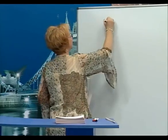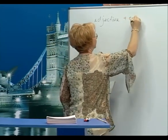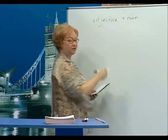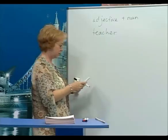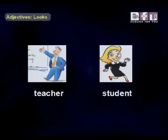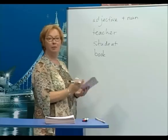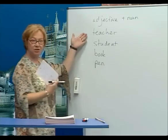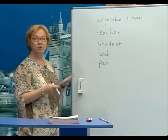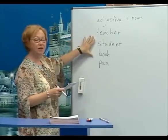An adjective gives information about a noun — adjective plus noun. Here are some nouns: teacher, student, book, and pen. Adjectives give information about the nouns.